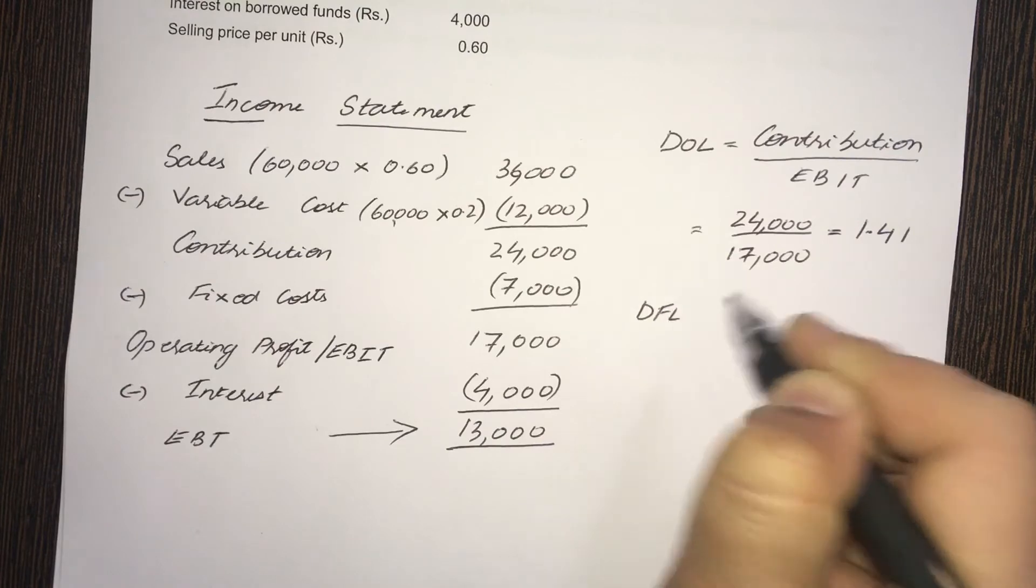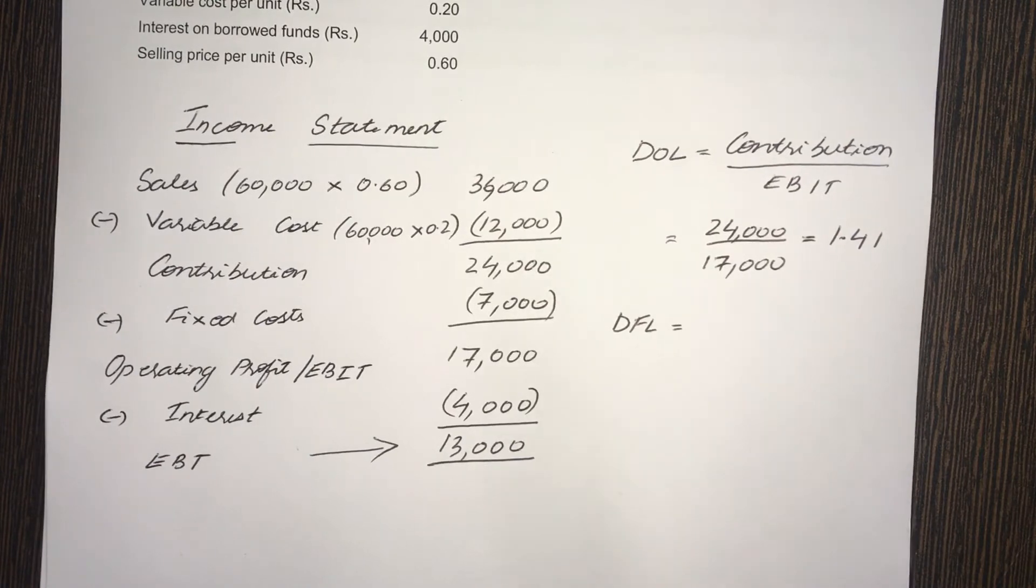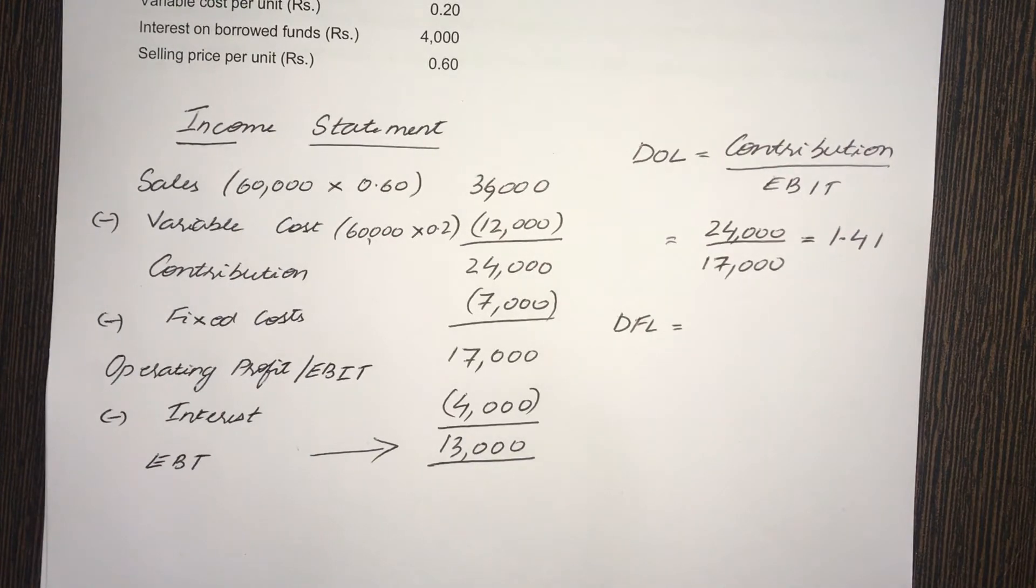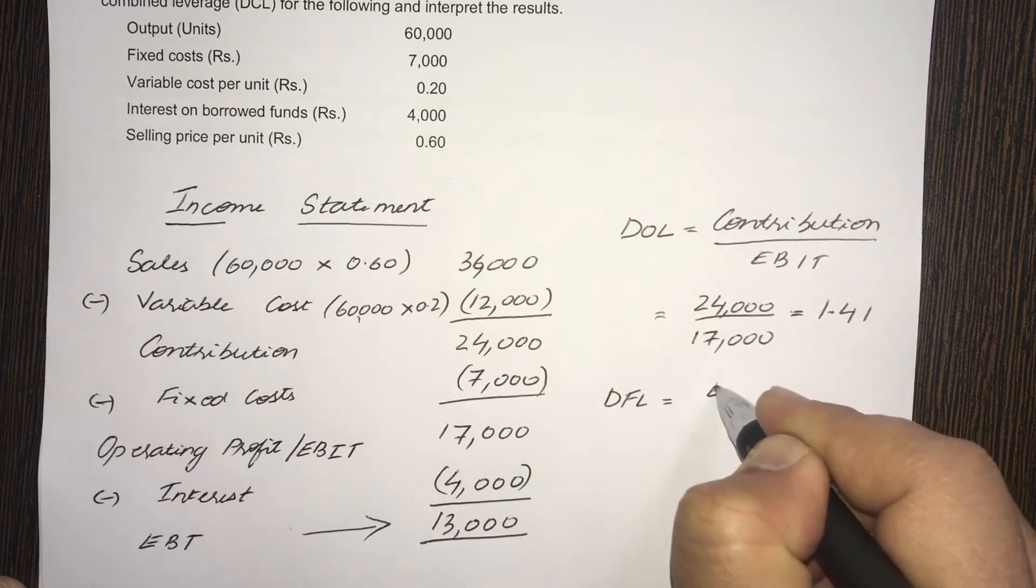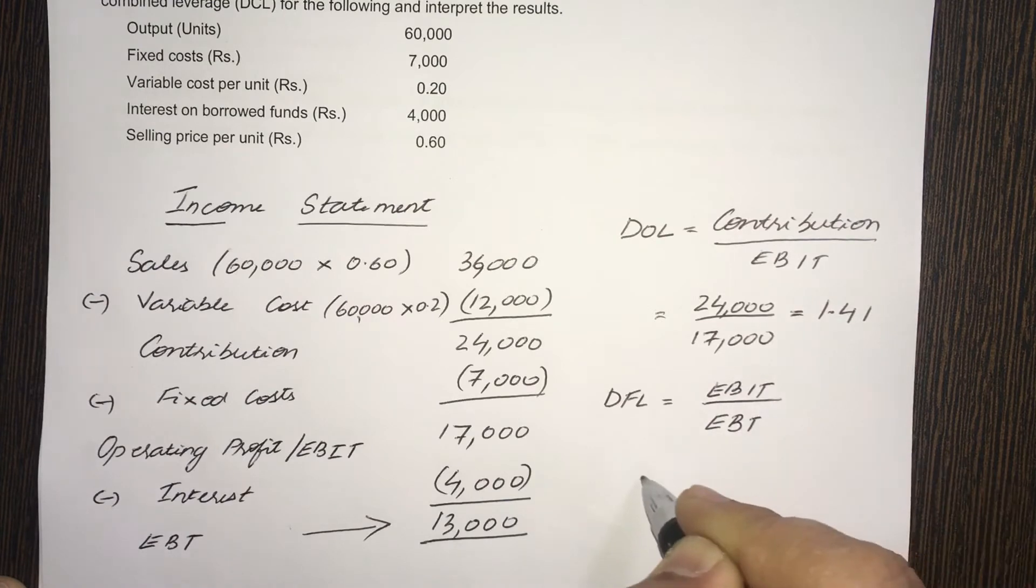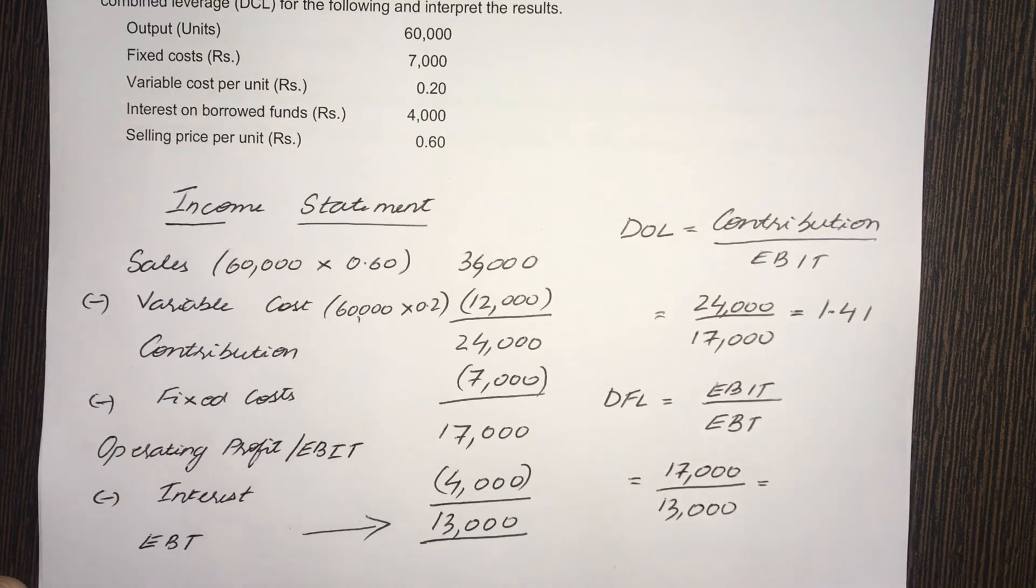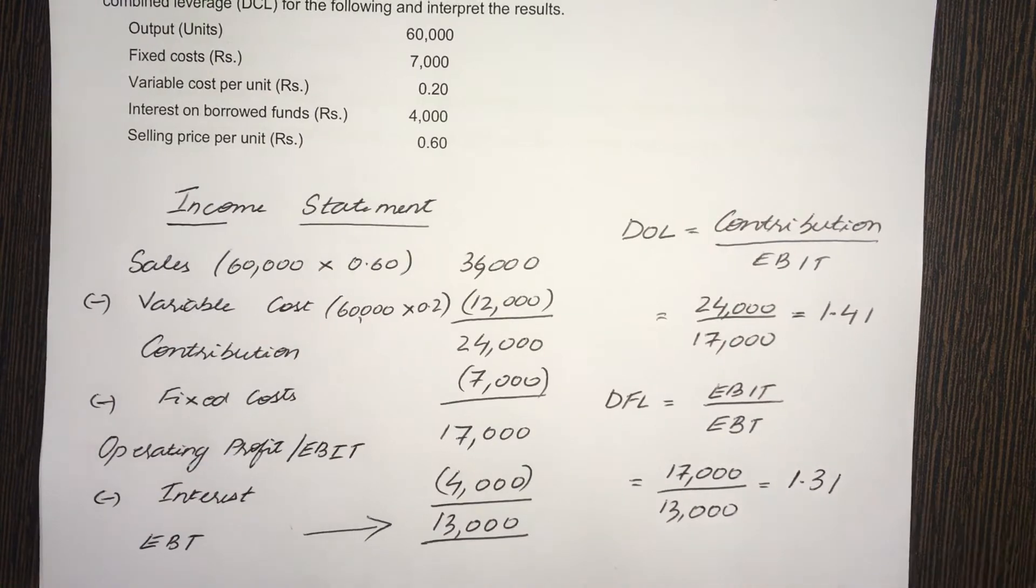And DFL, Degree of Financial Leverage. Now, you have to remember two things here. One is DFL when there is no preference dividend, and DFL when there is preference dividend. When there is no preference dividend, DFL will be EBIT divided by EBT. So, EBIT is 17,000 divided by EBT, which is 13,000. That works out to 17 divided by 13, which is 1.31.